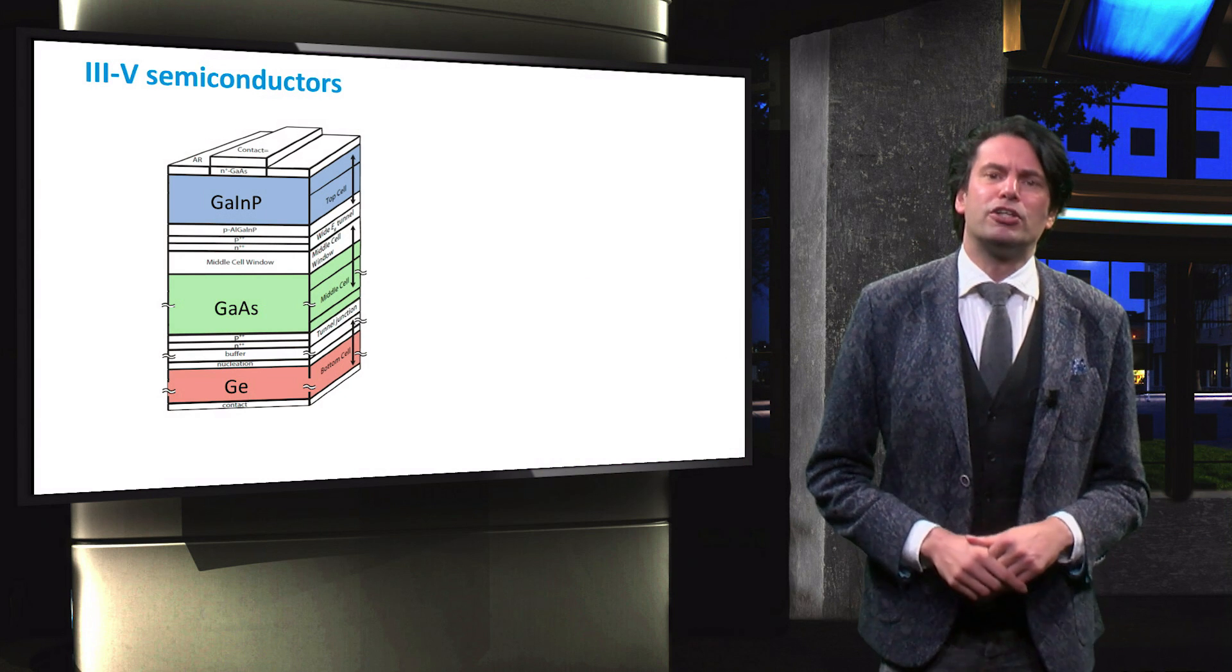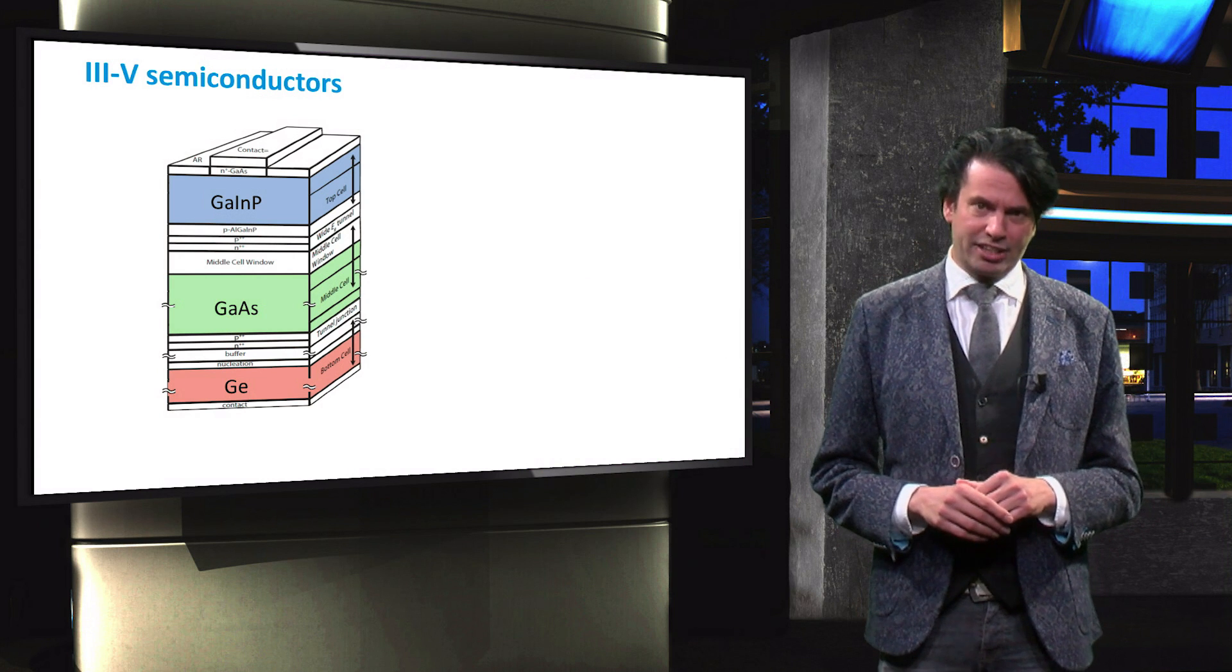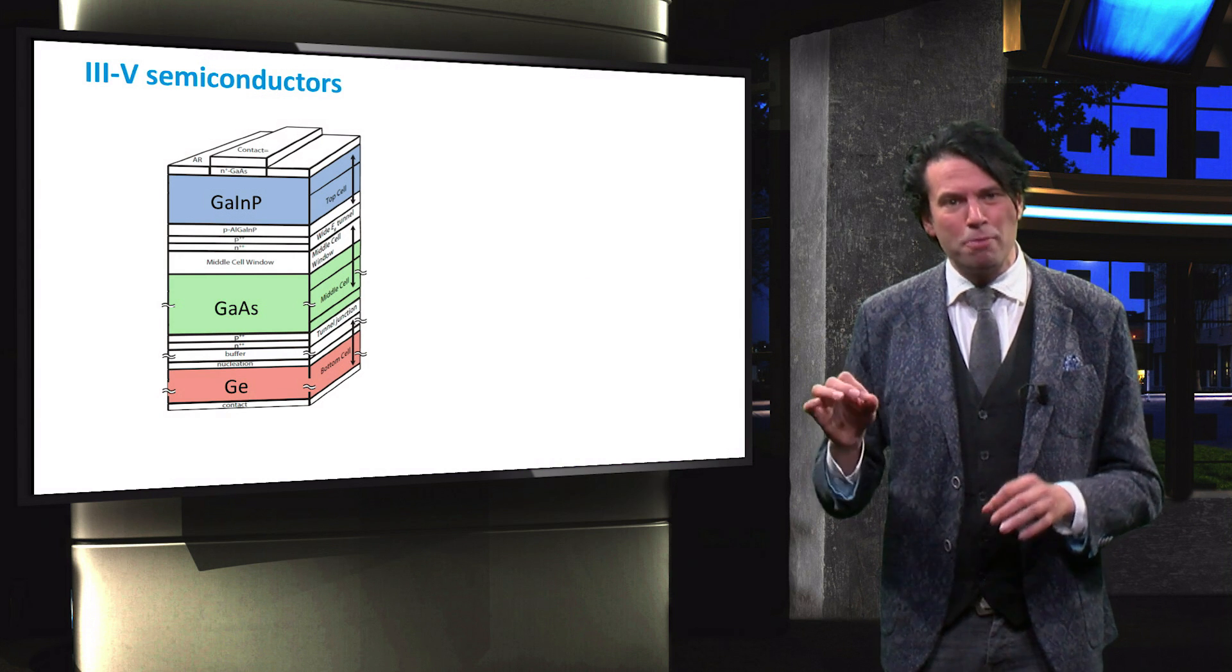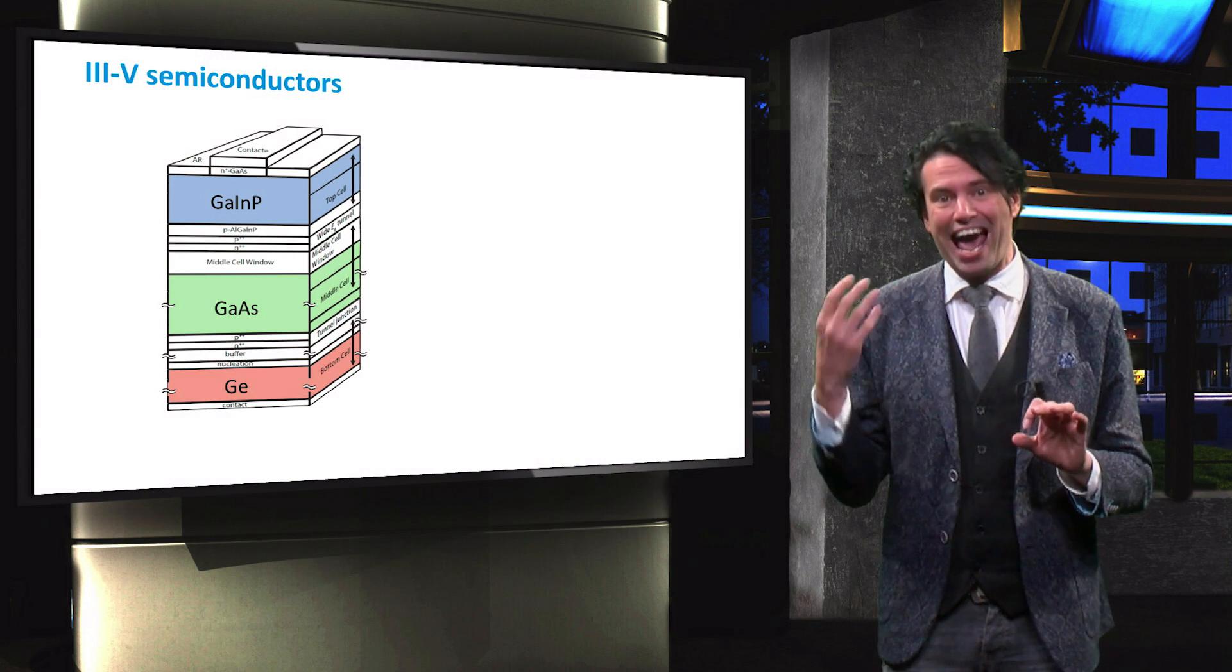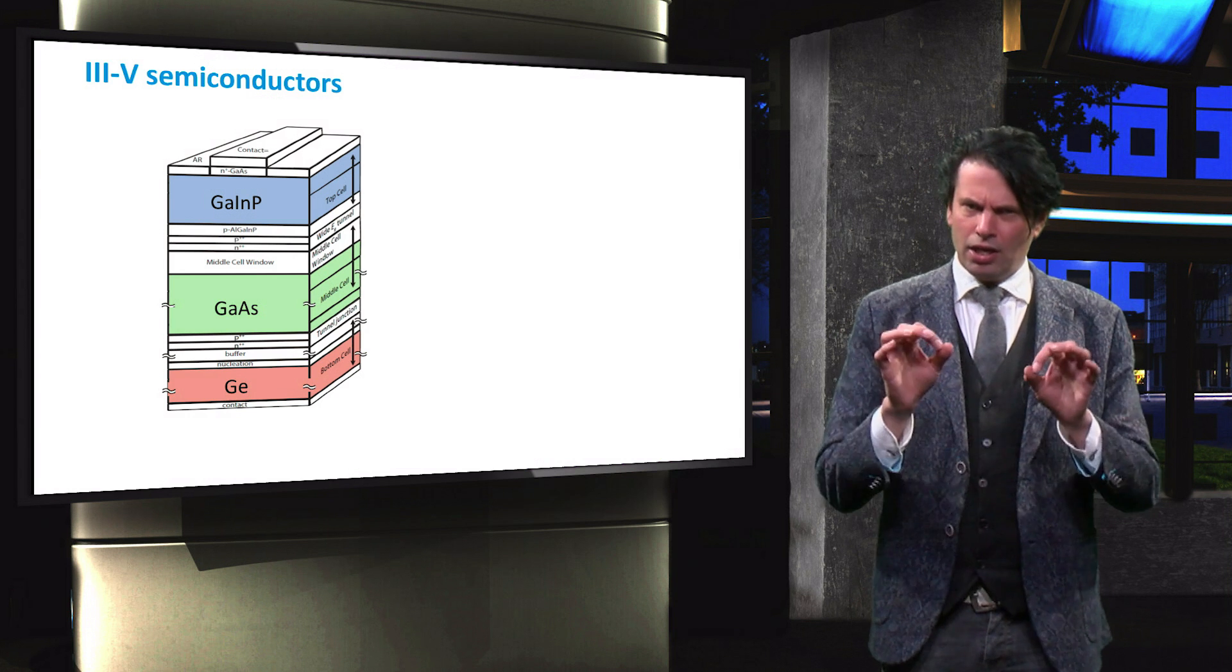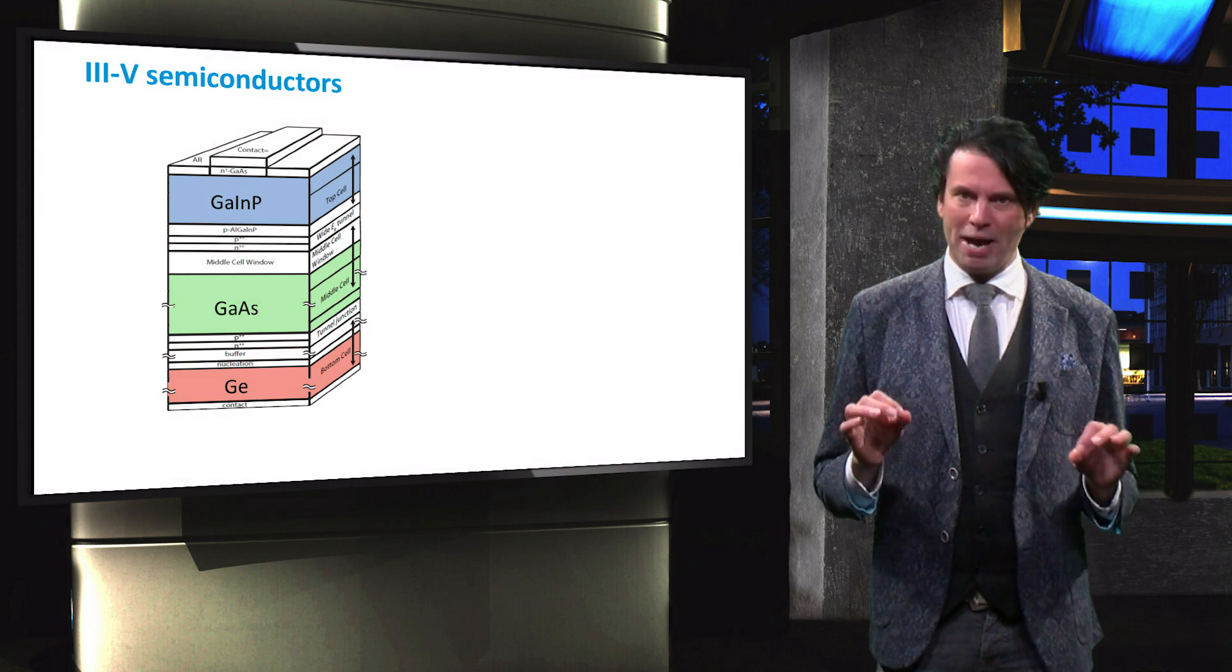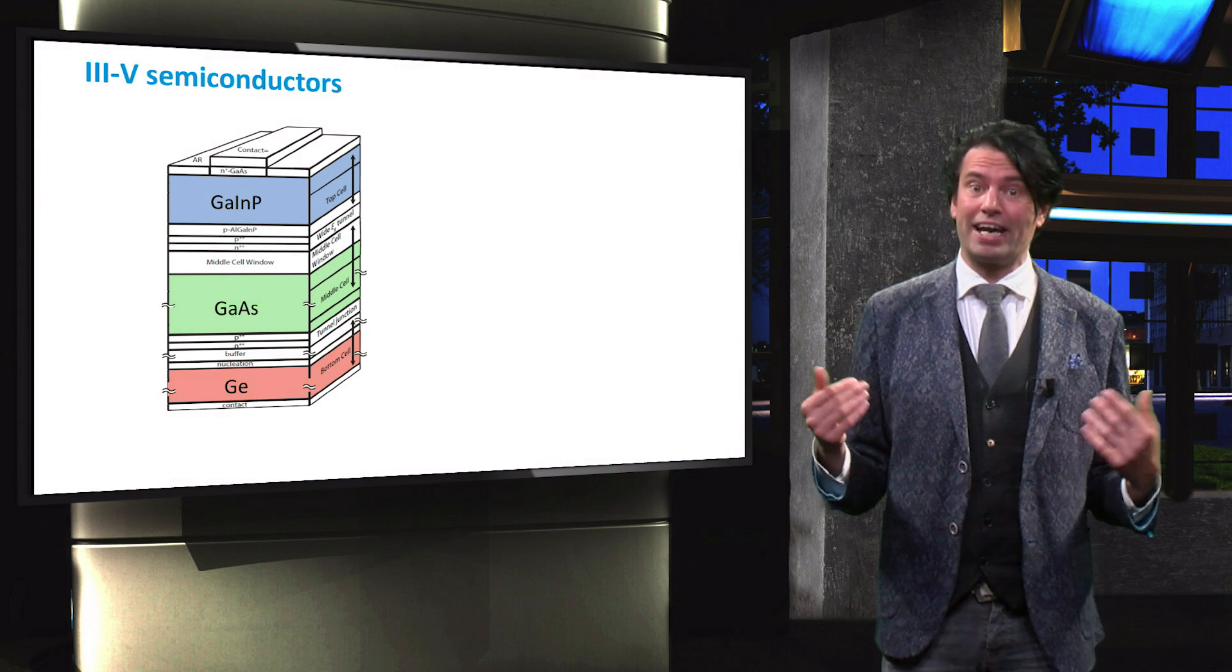A typical III-V triple junction device has a gallium-indium-phosphide top cell, gallium-arsenide middle cell and a germanium substrate, which acts as the bottom cell. Germanium is the preferred substrate because of its low bandgap, low cost and high mechanical strength.